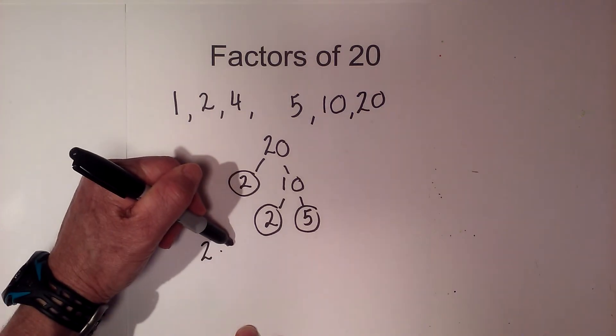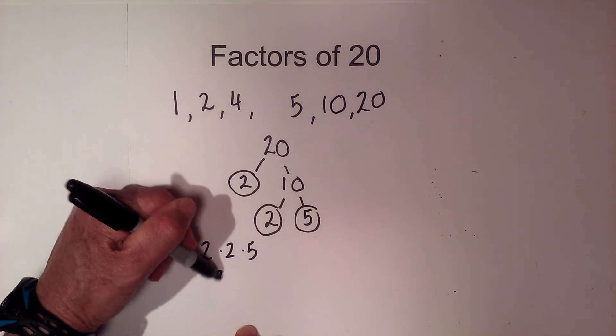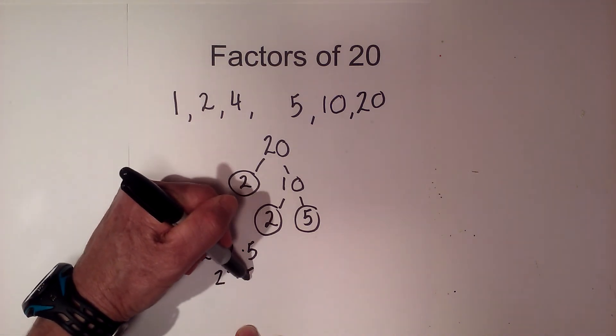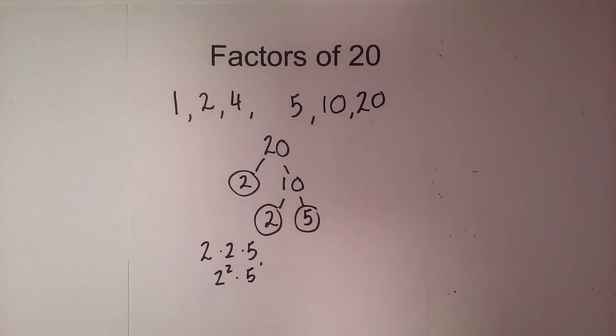So the prime factors of 20 are 2 times 2 times 5, or 2 squared times 5 to the first.